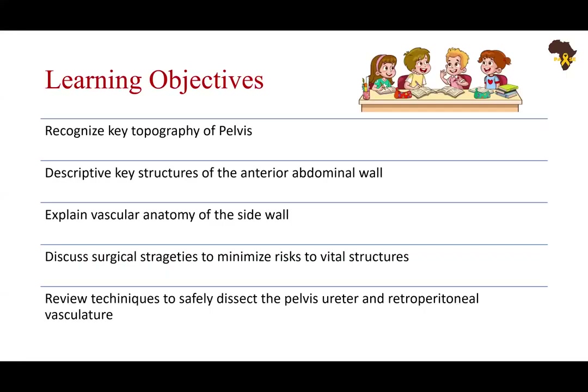Our learning objectives: we will learn the key topography of the pelvis, the key structures of the anterior abdominal wall, the vascular anatomy of the sidewall and retroperitoneum. We'll discuss surgical strategies to minimize risks to these vital structures and techniques to dissect safely.